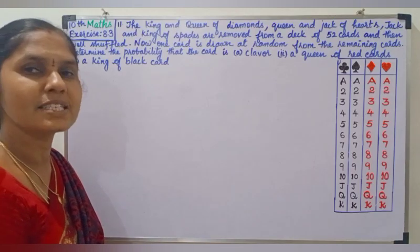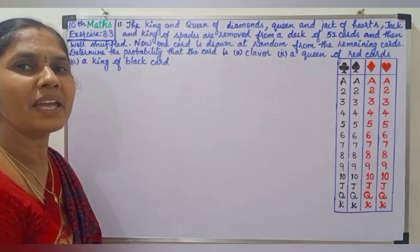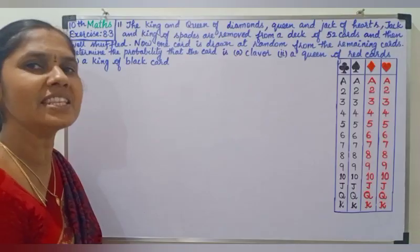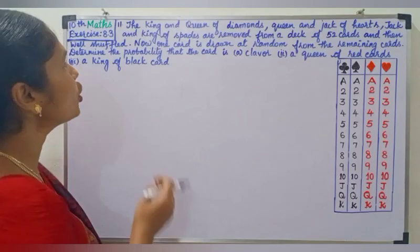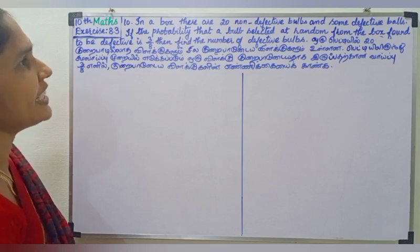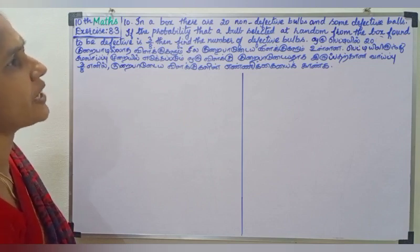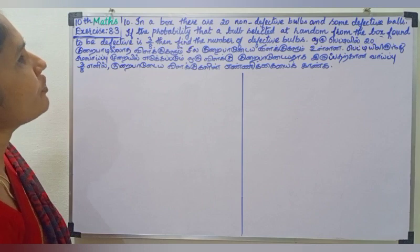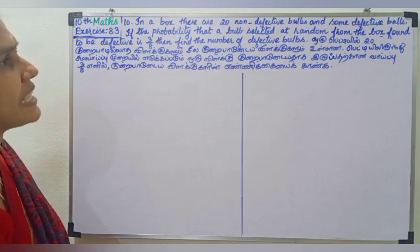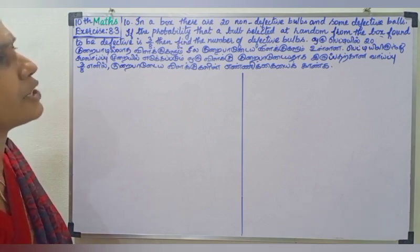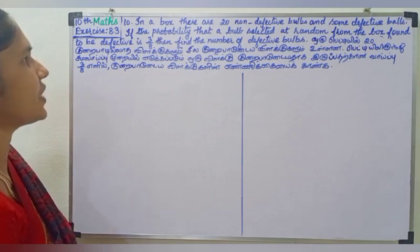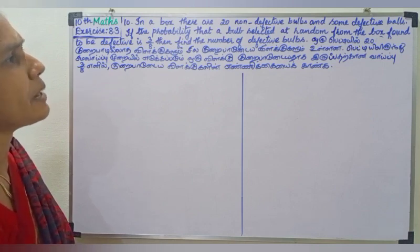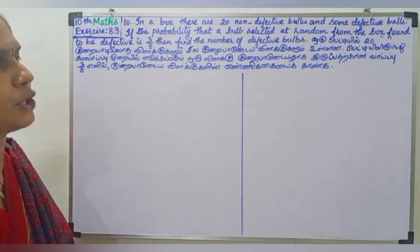Welcome children, this is Malati. Now I am going to explain 8.3, 10th question. In a box there are 20 non-defective balls and some defective balls. If the probability that a ball selected at random from this box is found to be defective is 3 by 8, then find the number of defective balls.